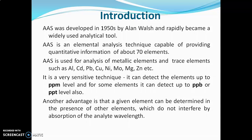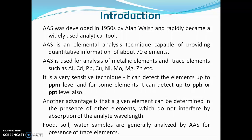Another advantage is that a given element can be determined in the presence of other elements which do not interfere by absorption of the analyte wavelength. This is where flame photometry and AAS differ: if the sample contains more than one metallic element, flame photometry will show spectral interference, and to avoid this the metallic element must be separated from the rest of the sample matrix before analysis. In AAS, such interference is not present, so there is no need for prior separation of elements, which reduces the time required.